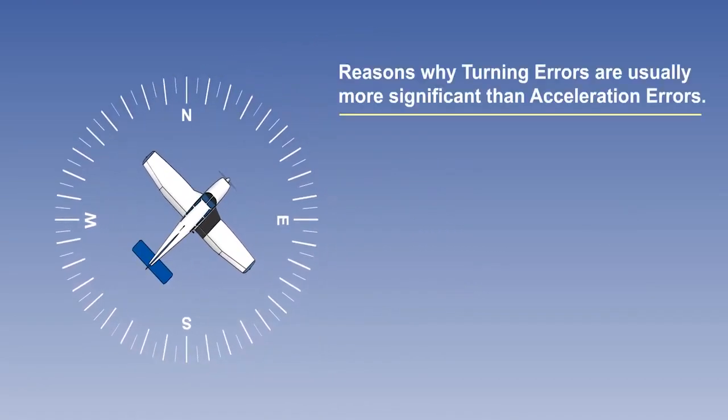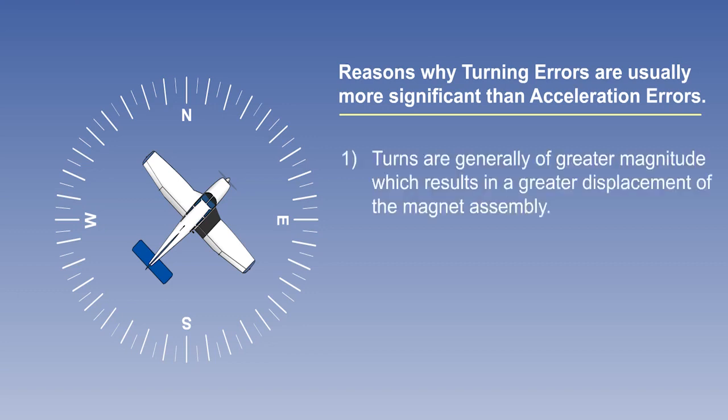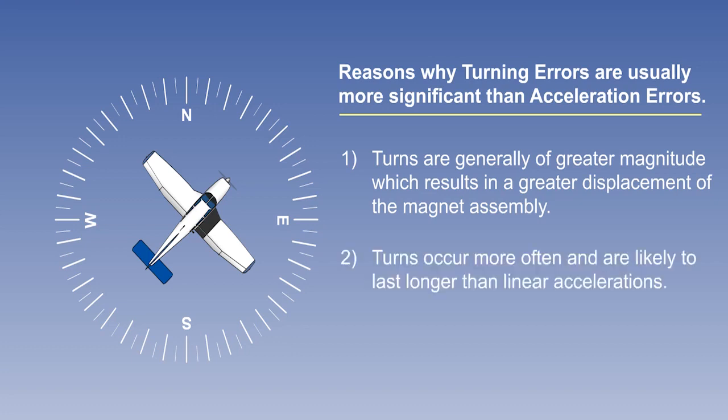Turning errors are usually more significant than linear acceleration errors for the following reasons. Turns are generally of greater magnitude, which results in a greater displacement of the magnet assembly. Turns occur more often and are likely to last longer than linear accelerations. Let's look at some actual examples of turning errors.